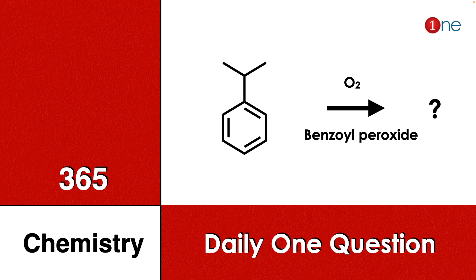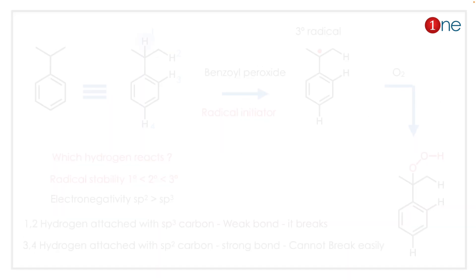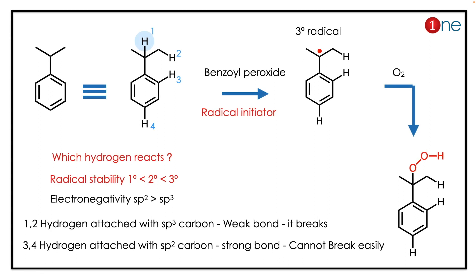Welcome to One Chemistry, this is the 365 Chemistry Series — daily one question for you. Here you have benzene with a side chain, you have propane, and you are using oxygen and benzoyl peroxide. You need to find what will be the final product. Benzoyl peroxide is a radical initiator — it promotes radical formation in the reaction.